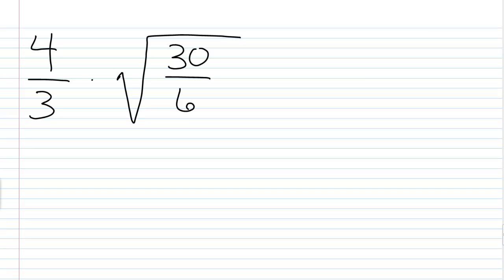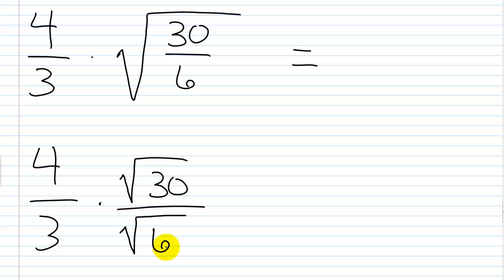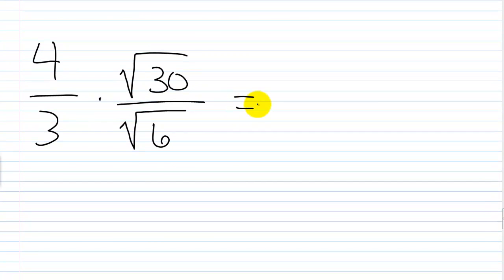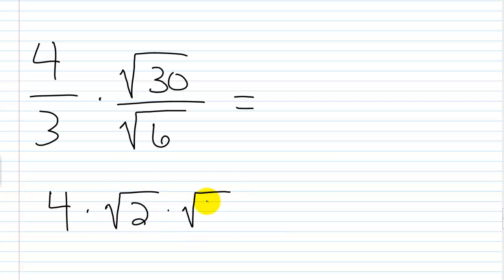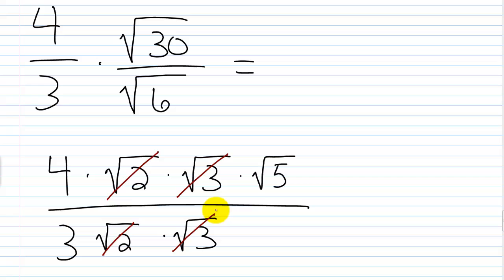Next: 4 thirds times the square root of 30 over 6. I'll write this as 4 thirds times the square root of 30 over the square root of 6. Square root of 30 breaks down as square root of 2 times square root of 3 times square root of 5. Square root of 6 is square root of 2 times square root of 3. I can cancel square root of 2 and square root of 3 — essentially canceling square root of 6 between numerator and denominator. That leaves 4 times square root of 5 over 3.